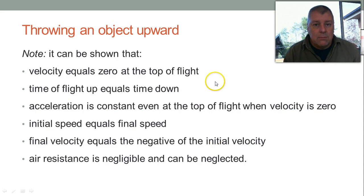So what can we say in terms of generalizations about up and down flight for physical science? The velocity equals zero at the top of flight. That's really handy, because sometimes we want to just analyze half the flight. Time of flight up equals the time of flight down. Acceleration is constant, even at the top of the flight. So when the velocity is zero, right at the top, acceleration doesn't turn off, it's still on.